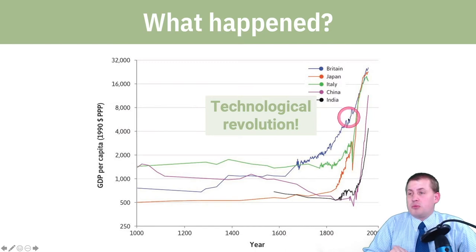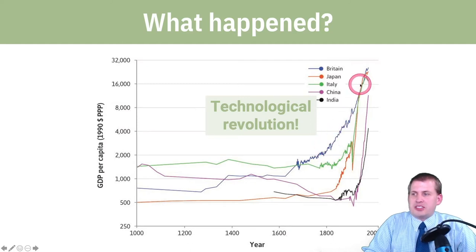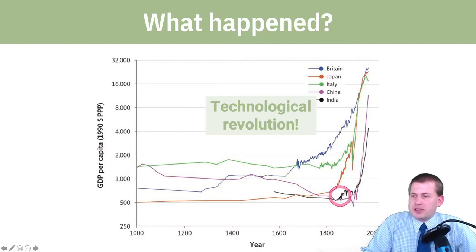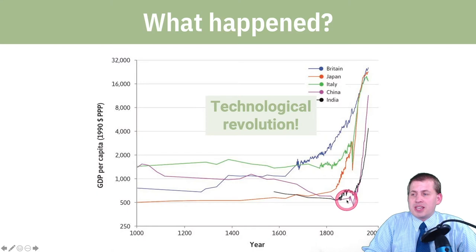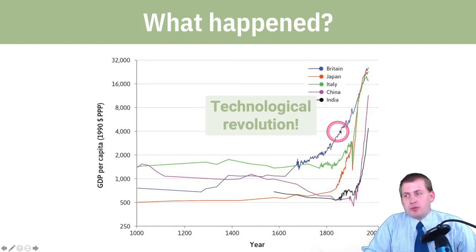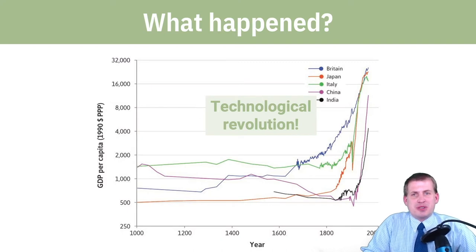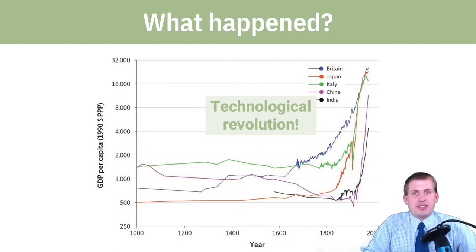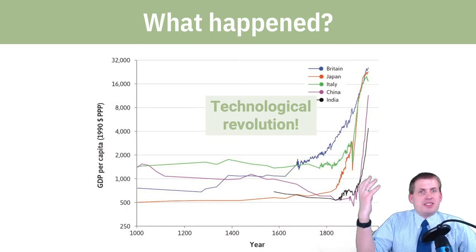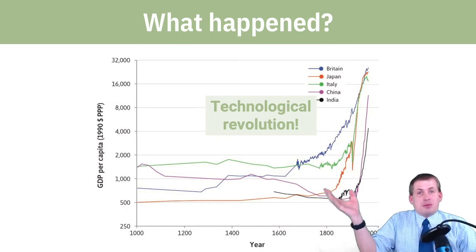Going back to the downsides of capitalism: Britain was the first to launch off on this trajectory, but India, a British colony for hundreds of years, was not able to have this massive technological revolution until the early 1900s. That's in part because of colonialism and imperialism — Britain was able to extract wealth, natural resources, and labor out of India to fuel their own technological revolution, leaving many people behind from the gains of technology.